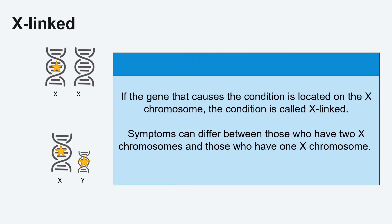X-linked describes conditions or syndromes caused by changes to genes on the X chromosome, which is a sex chromosome. Symptoms can differ depending on the number of X chromosomes a person has. Those assigned with two X chromosomes typically do not show any symptoms or do not show severe symptoms, while individuals with only one X chromosome will show severe symptoms.